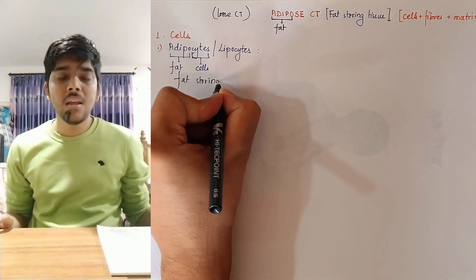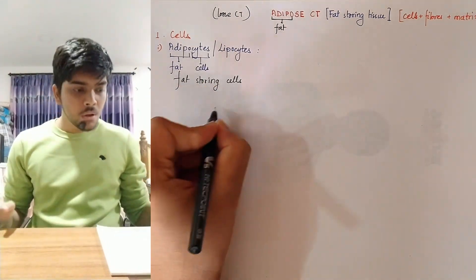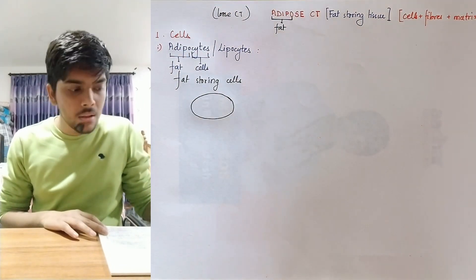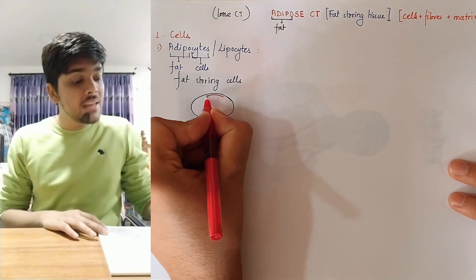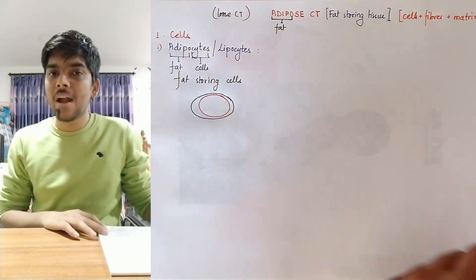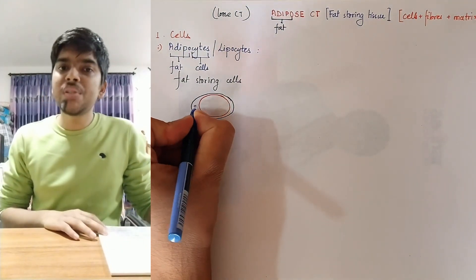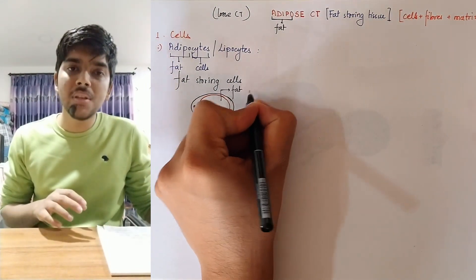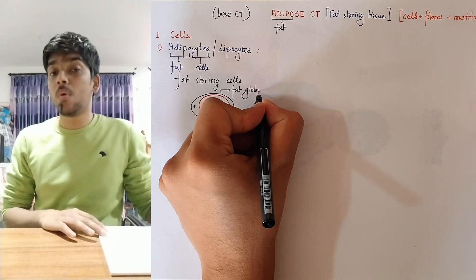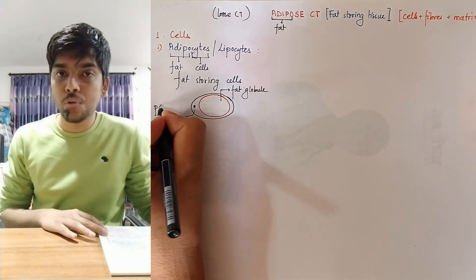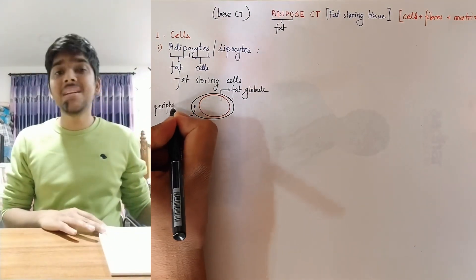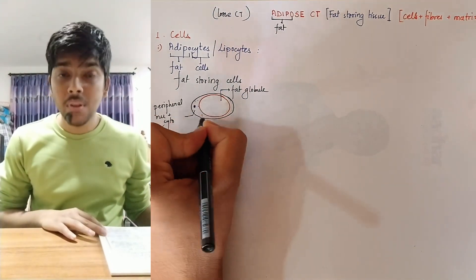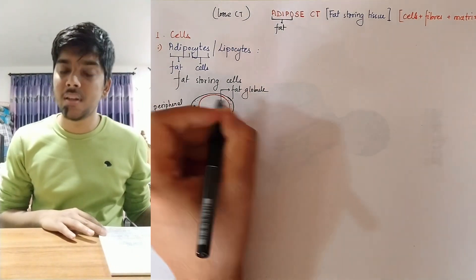So these are fat storing cells. What do they look like? There's a large spherical or oval cell. Inside the cell is a large fat globule. Since the fat globule is large, it pushes the cytoplasm, nucleus, and all other organelles to the side. As a result, you get peripheral nucleus and cytoplasm. That's what a typical adipocyte looks like, which is most commonly found in the human body. But that's not the only adipocyte present.